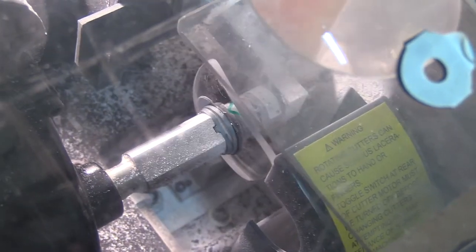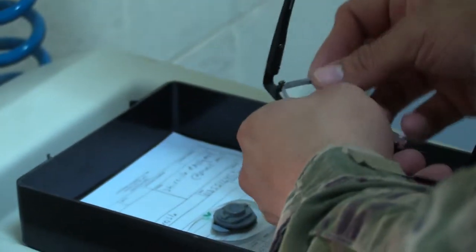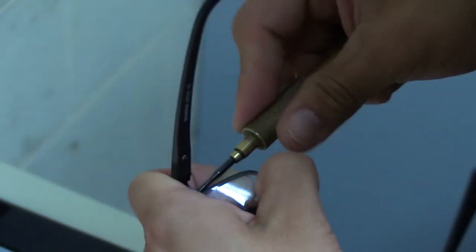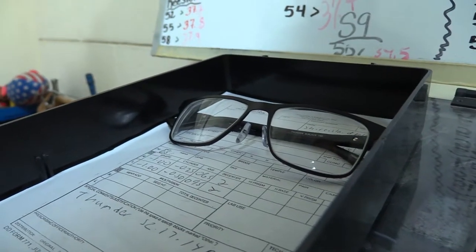They can grind them, they can edge them. They're basically cutting the lenses, taking the prescription blanks, putting them into the frames that the people choose, and then delivering them back to us or to the members here.